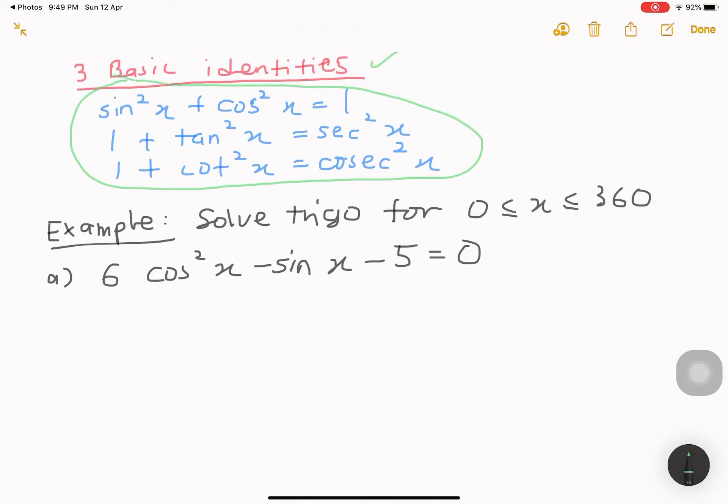The really basic one that you need to understand on how to solve this. The first one we have sin square x plus cos square x equals to 1. If we want to find sin square x, this is equal to 1 minus cos square x. If you want to find cos square x, then it will be 1 minus sin square x.